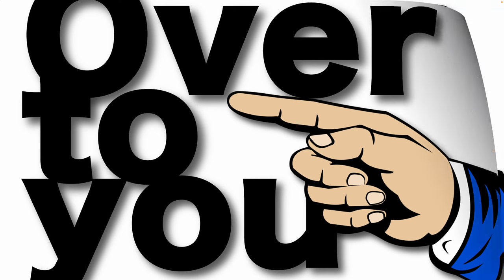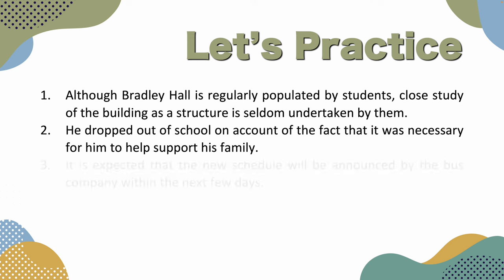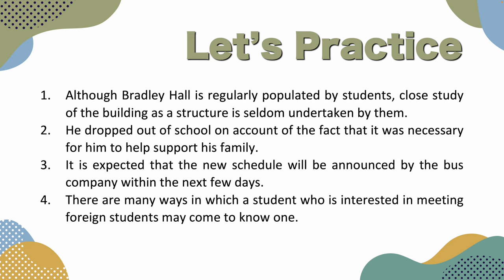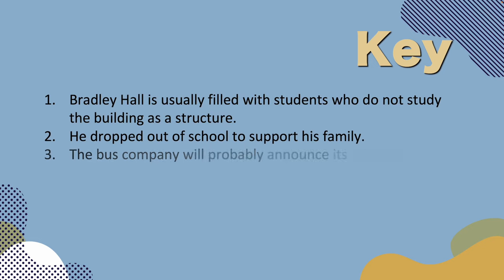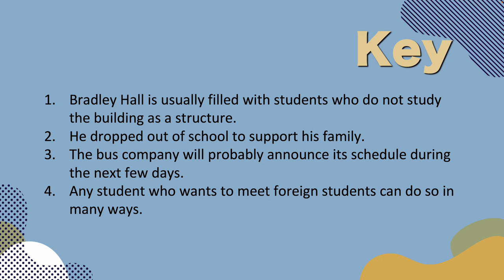Over to you — let's practice. I'm going to give you four sentences. Pause the video and make them more concise and clear, and you can combine sentences if you'd like. Now that you're back, let's look at the key. Number one: 'Bradley Hall is usually filled with students who do not study the building as a structure.' Number two: 'He dropped out of school to support his family.' Number three: 'The bus company will probably announce its schedule during the next few days.' Number four: 'Any student who wants to meet foreign students can do so in many ways.'